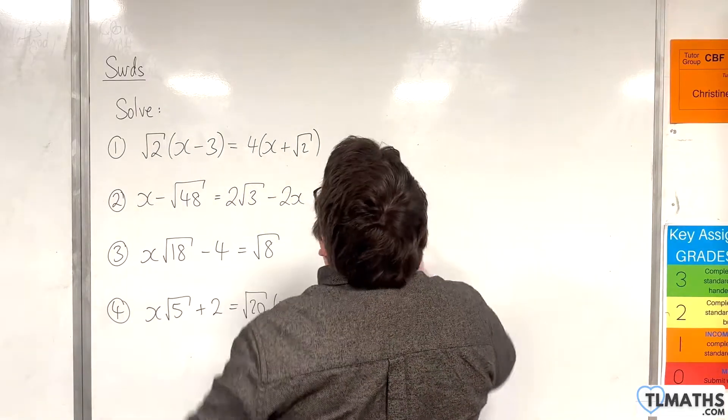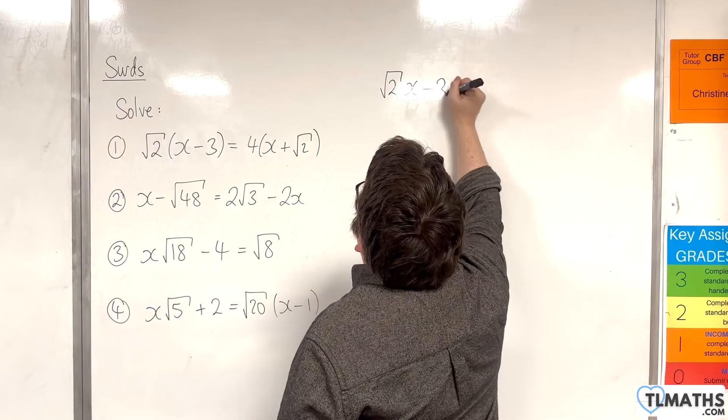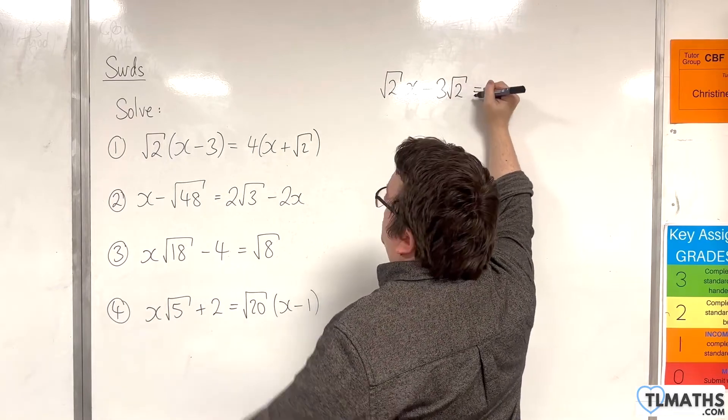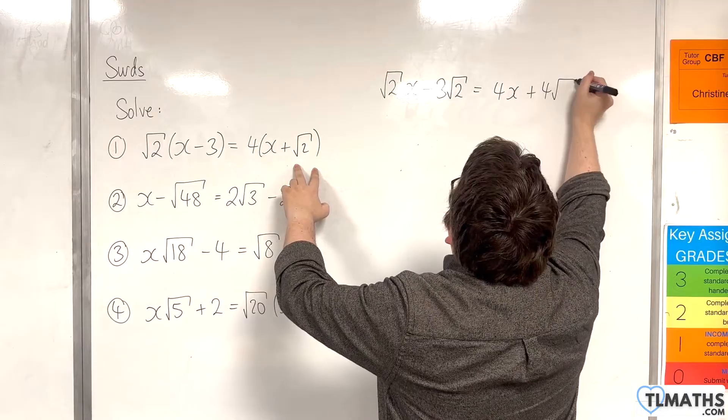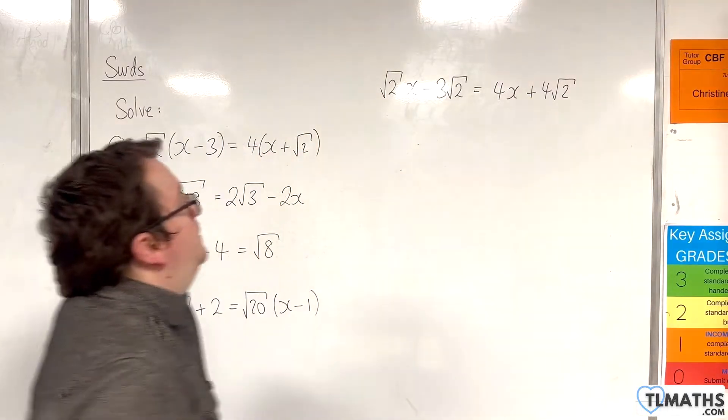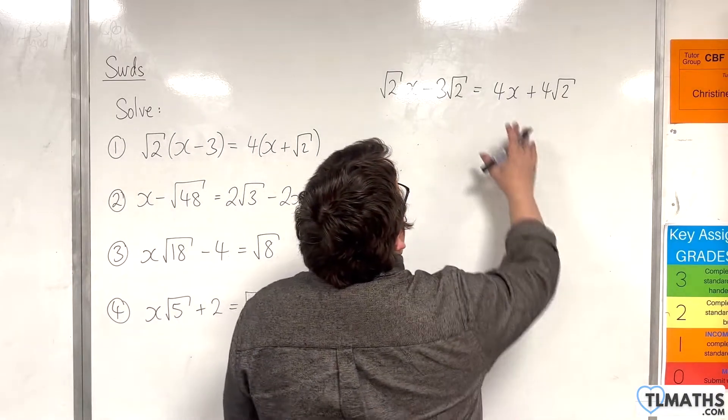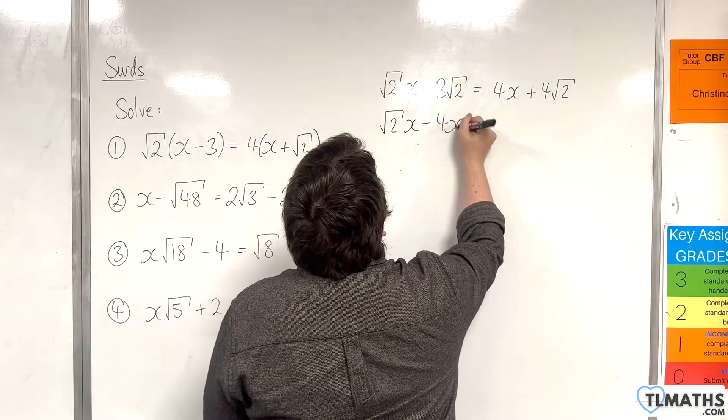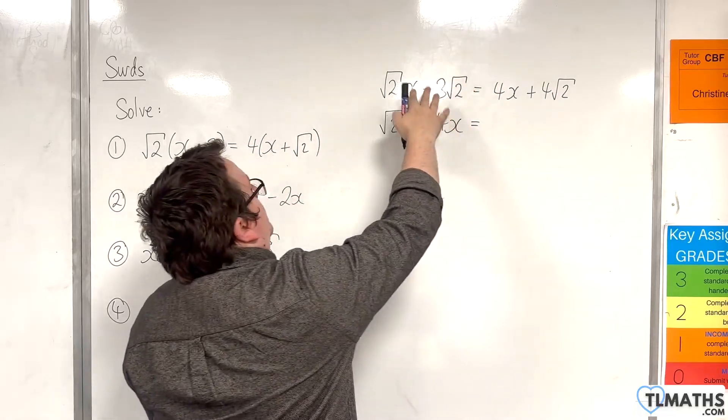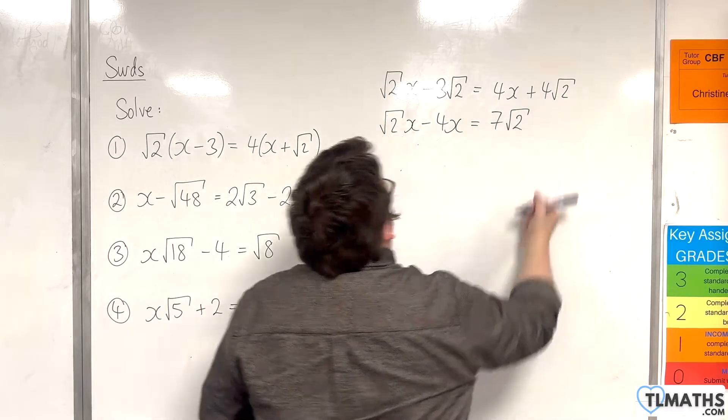We have root 2 times x take away 3 is equal to 4 lots of x plus root 2. So I'm going to expand the brackets out first. We'll have root 2 times x take away 3 root 2 on the left hand side, and 4x plus 4 root 2 on the right hand side. So I'm going to subtract 4x from both sides to get all the x's on the left hand side. Add 3 root 2 to both sides and I'll have 7 root 2 on the right hand side.